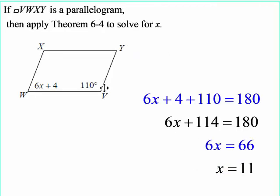Next example. We're going to apply theorem 6-4, which means that these consecutive angles are supplementary. So the setup is that expression 6x plus 4 plus the other angle 110 is equal to 180. Combine like terms. Subtract the 114 from each side and then you're dividing both sides by 6 and you get x is 11.